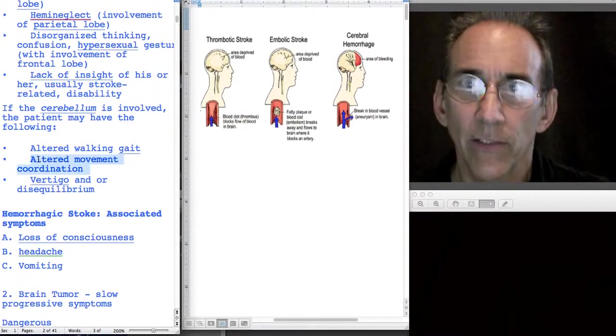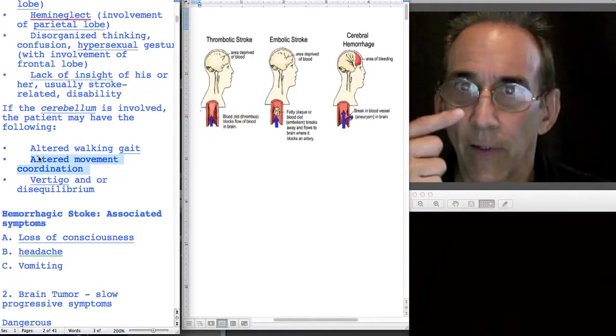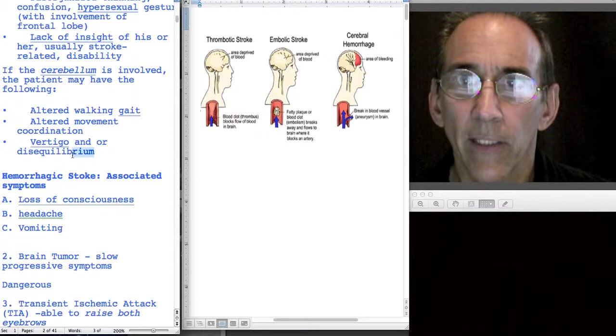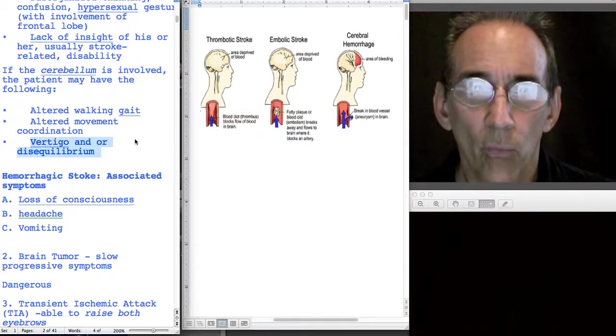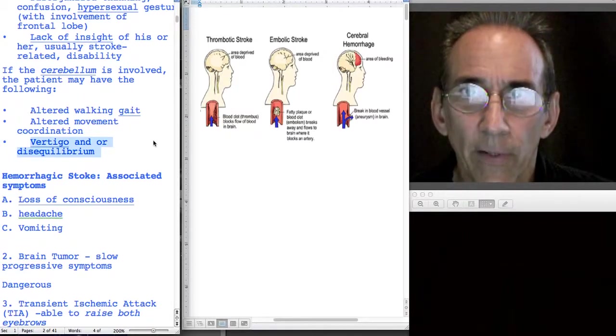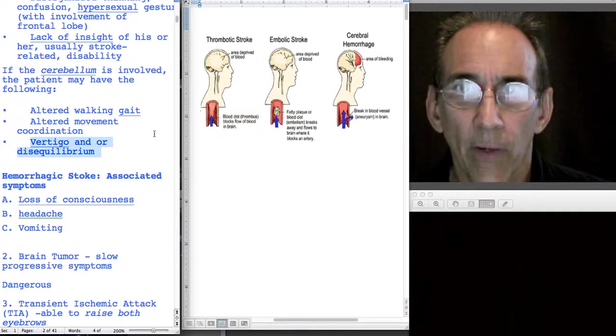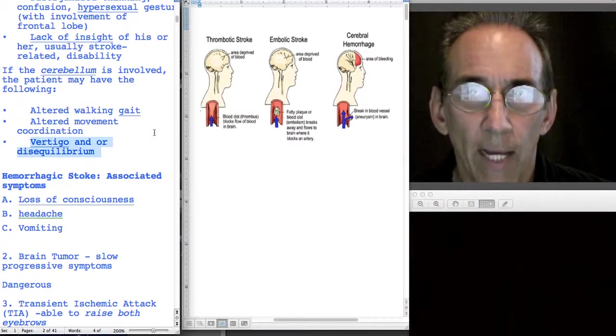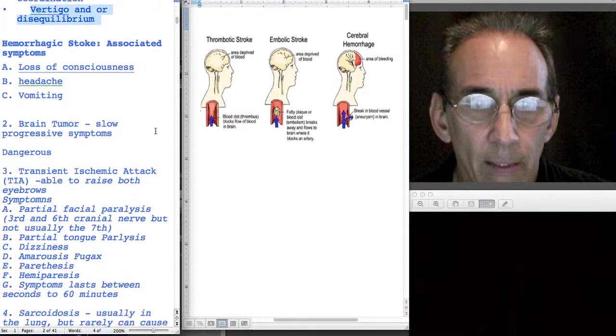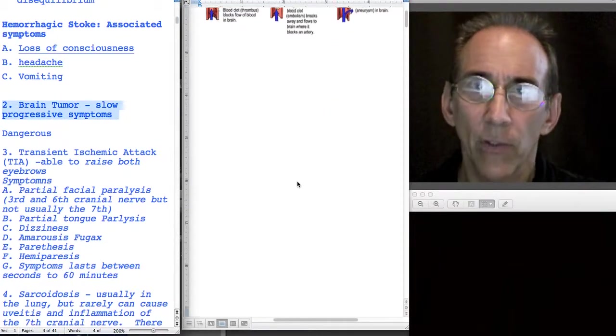The fine motor coordination may be reduced - eye to finger, finger to ear, finger to nose, those kind of coordinations will be reduced if it's a cerebellum type. They may also complain of vertigo, feeling the room is spinning. The most important thing with stroke is almost always there's going to be more than one cranial nerve affected. There's going to be more obvious symptoms.